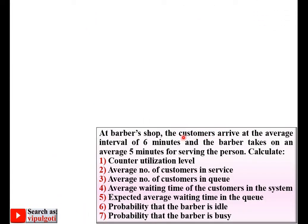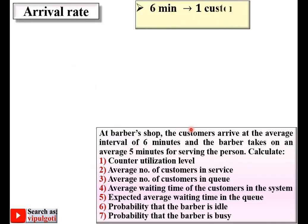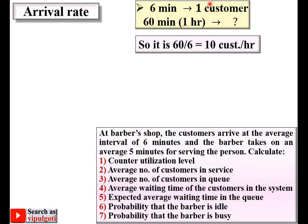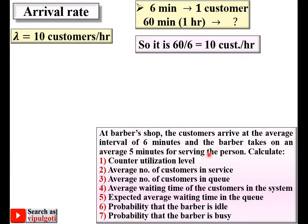It is given that customers arrive at an average interval of 6 minutes — that means one customer arrives every 6 minutes. So for 60 minutes (1 hour), we get 60 divided by 6, which equals 10 customers per hour. This is the arrival rate, denoted by lambda (λ = 10).